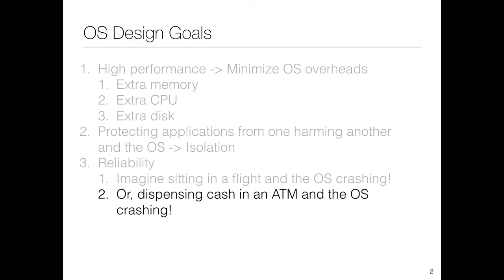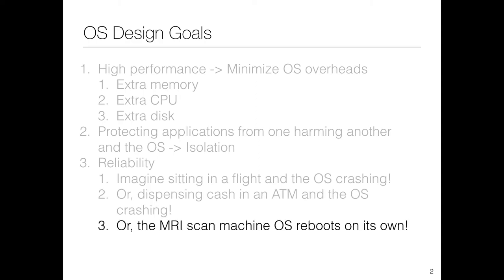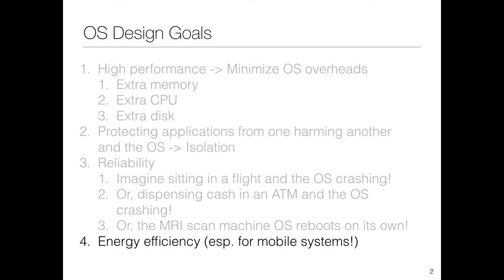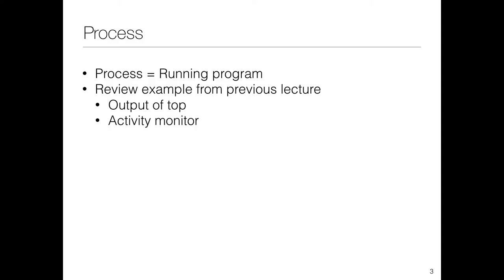We saw Windows XP in many ATMs — we don't want it to crash. Or if an MRI scan is going on and the machine just reboots on itself, that's a problem. With the advent of mobile operating systems like Android and iOS, energy efficiency becomes even more important. Apple devices tend to do better because they control both hardware and software — they don't have to support multiple hardware configurations, so they can optimize the hardware for the software and vice versa.